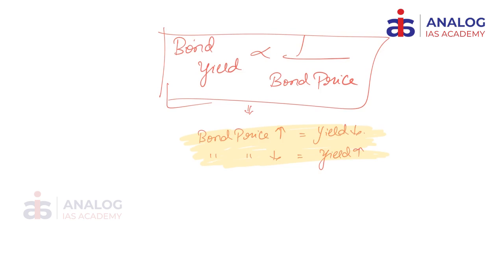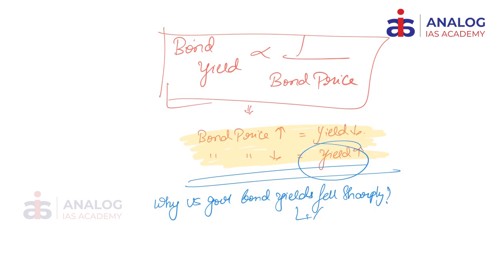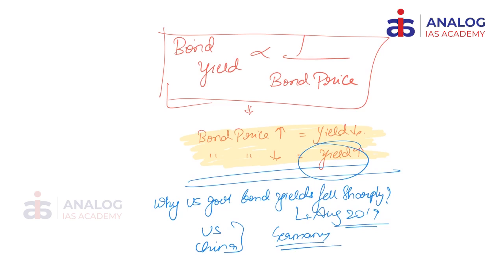The bond yield is inversely proportional to bond price: whenever bond prices increase, the yield will decrease; whenever bond price decreases, the yield will increase. That is the central concept of bond yield. Last year in August 2019, the US government bond yields fell very sharply. The global economy has been slowing down from the last two years — some of the biggest economies are either growing at a slower rate, for example the US and China, or actually contracting, as in the case of Germany. In this context, in August 2019 US treasury bond yields fell very sharply because there was a rise in demand for government securities.